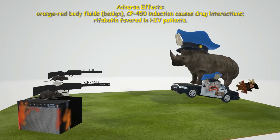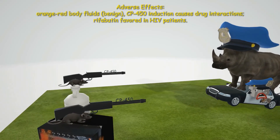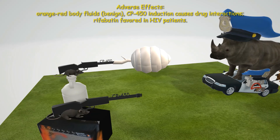On each of the rifles we see the CYP450 logo, which helps us remember that rifamycins are well-known CYP450 inducers and can increase the rate of metabolism of other drugs cleared by the liver through the P450 system. Rifabutin, represented by the mouse on the bottle, is favored over rifampin in patients with HIV infection due to less cytochrome P450 stimulation — we give this mouse a hive to remember that rifabutin is preferred in HIV patients.